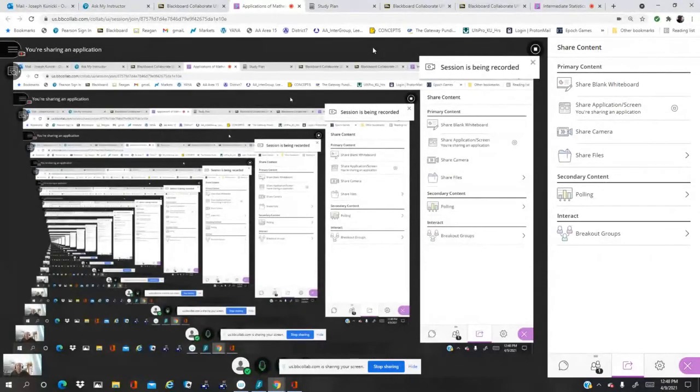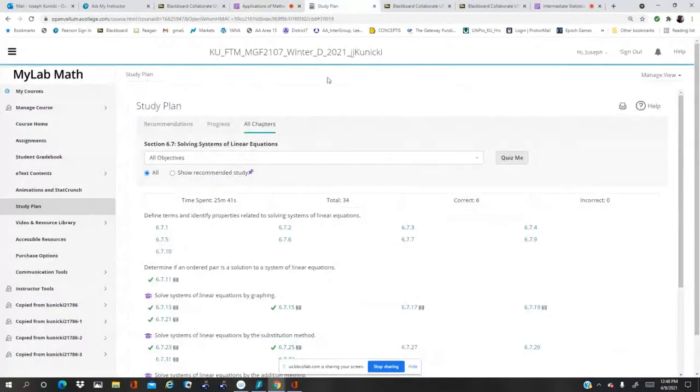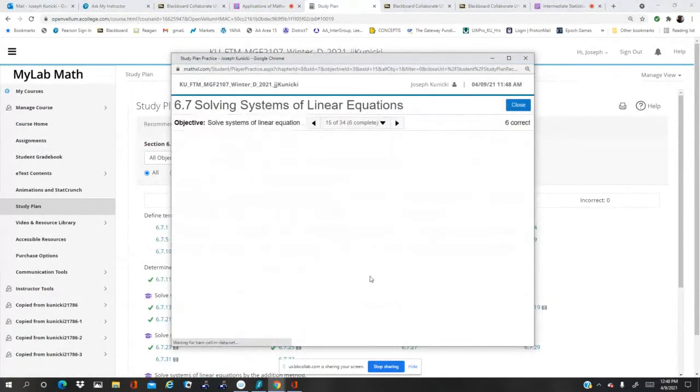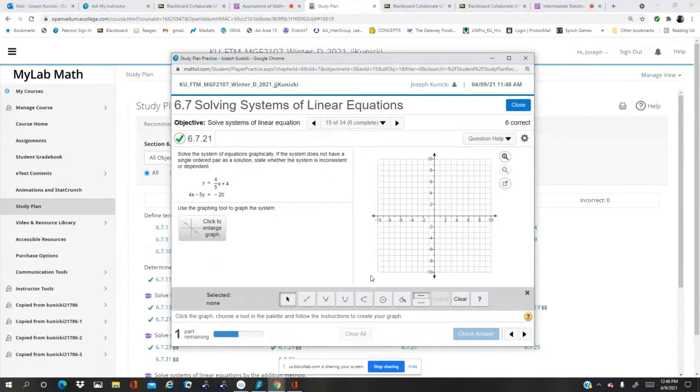Okay, we're going to try problem 6.7.21. The first thing I notice is the coefficients. If I take the opposite of the X coefficient, which is minus 4, and divide by minus 5, I get four-fifths. I noticed those are the same equations. So the first equation is in slope intercept form: four-fifths X plus four.